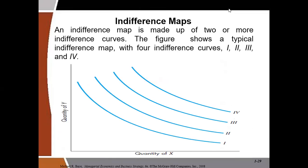Finally, this graph shows an indifference map — several indifference curves together — illustrating that curve IV gives a higher level of satisfaction than curve III, curve III higher than curve II, and curve II higher than curve I. This brings us to the end of the video on properties of the indifference curve. In the next video, I'll discuss income as a constraint, since even though we want to maximize satisfaction, we must operate within our means. Please like, comment, share, and subscribe. Thank you.